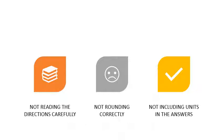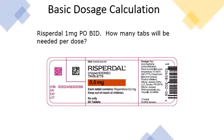Another common problem is that students do not include the units in their answer. Even in the fillable area, if the question says 'how many units will you give?' and the answer is 12, you would need to put '12 units' even though the question already says units. It's better to put it there than not. It will be marked wrong if the unit is not included and partial credit will not be given.